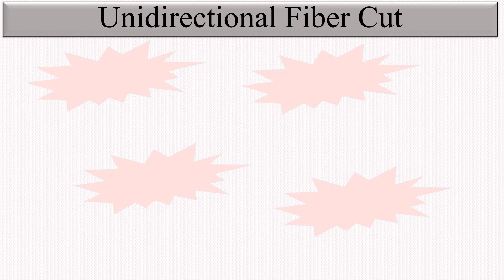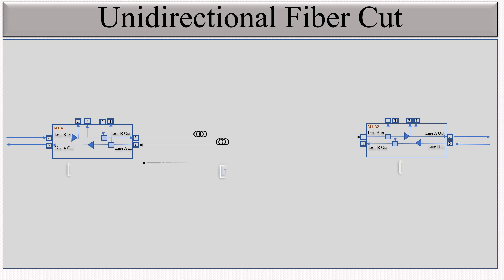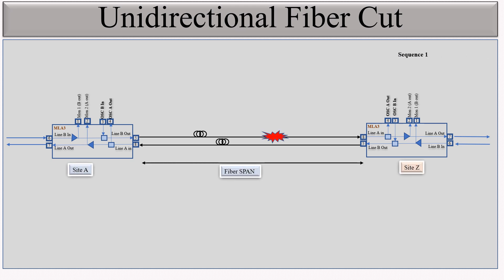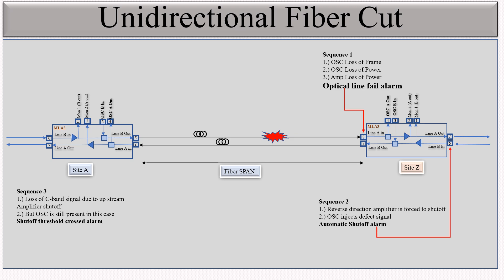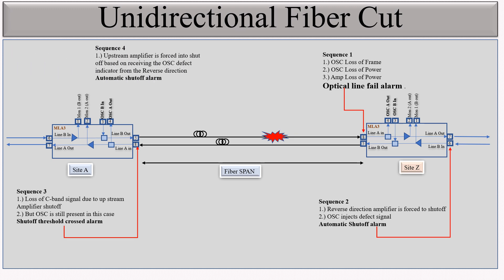For the unidirectional fiber cut, here is the same setup — site A, site B, the fiber cut, and the alarm sequence. The optical line fail alarm appears on port number 8. In the same way, the automatic set-off alarm appears on port number 6. For the input, this alarm appears on port number 6. The set-off threshold cross alarm appears on port number 8 of the far-end amplifier, and the automatic set-off alarm appears on port number 6.